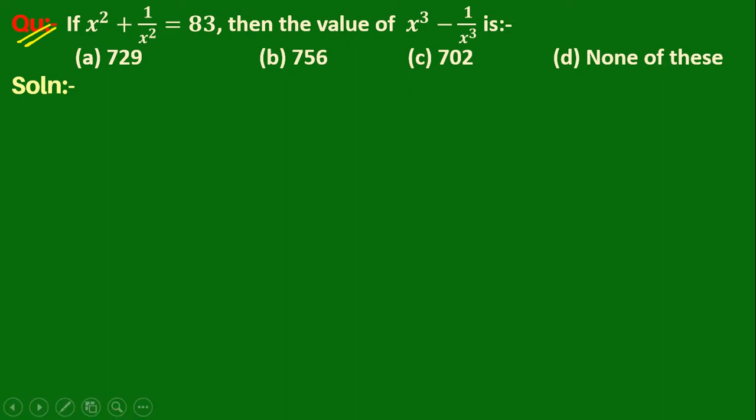The question is: if x² + 1/x² = 83, then the value of x³ - 1/x³ is? The question states that x² + 1/x² is equal to 83. Now we use an identity.